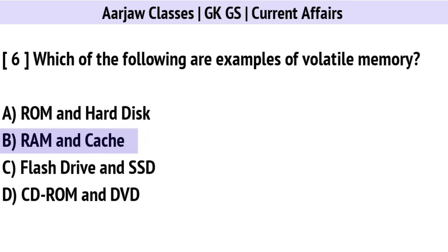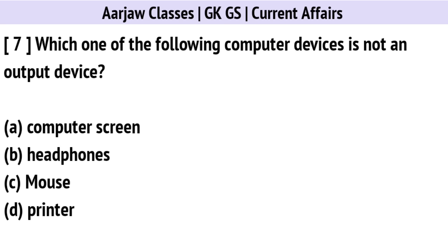Which of the following are examples of volatile memory? The correct option is B: RAM and Cache.